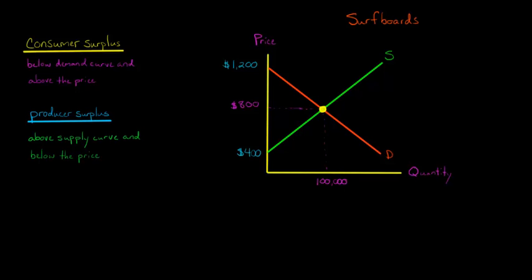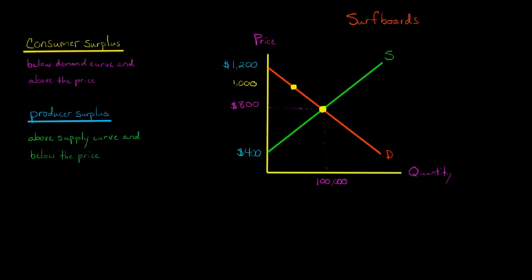In a free market, we trace this out to a quantity of 100,000 surfboards being produced, and a price of $800 — that's our equilibrium price and equilibrium quantity. At this equilibrium price of $800, there were some people in the market who would have been willing to pay more than $800 to get a surfboard. For example, at one point that would be a price of $1,000. So there are people who would have paid $1,000 but got the surfboard for $800, meaning each of them got $200 of surplus.